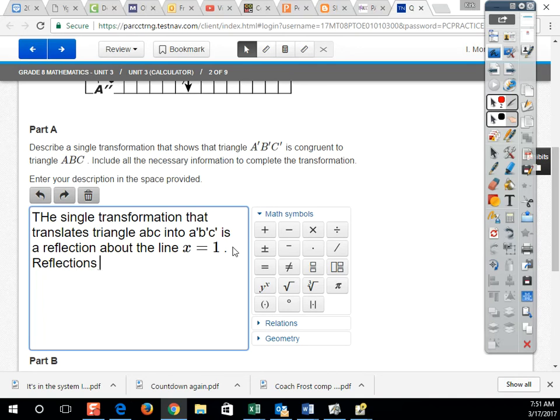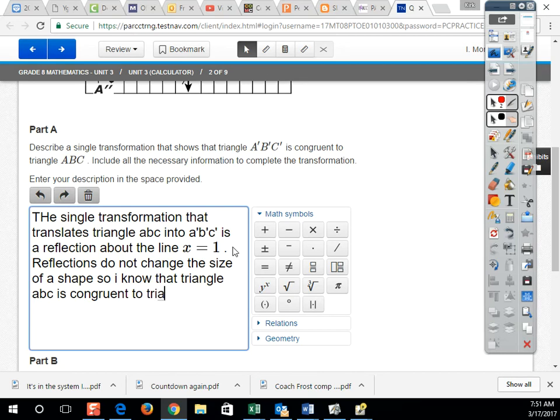So reflections do not change the size of a shape. So I know that triangle ABC is congruent to triangle A prime, B prime, C prime. And that's pretty much all you have to do, because we are saying exactly what transformation will get there, and that reflections do not create shapes that are bigger or smaller.